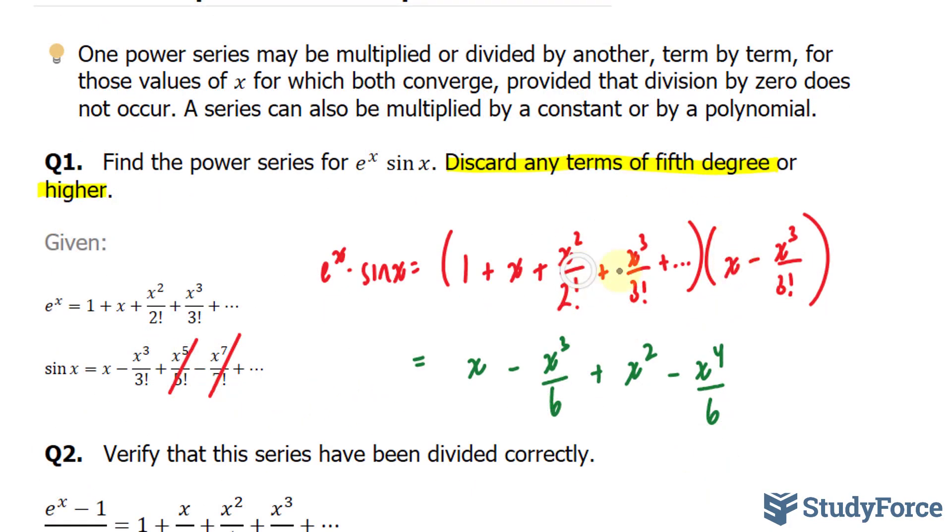Next, I'll take this x, multiply it to the following. This gives me x to the power of 3 over 2 factorial. This multiplied to this term gives us x to the power of 5. We can't include that one. x times x to the power of 3 over 3 factorial is x to the power of 4 over 3 factorial, which is 6. This term multiplied to this term is something greater than a power of 5.